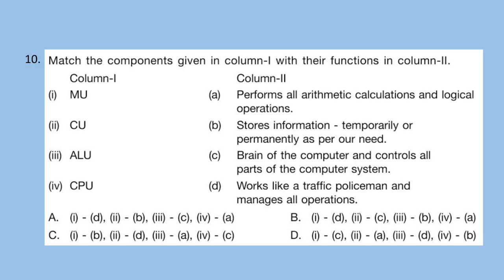Question 10: Match the components given in column 1 with their functions in column 2. Column 1 has: MU, CU, ALU, CPU. Column 2 functions: A. Performs all arithmetic calculations and logical operations. B. Stores information temporarily or permanently. C. Brain of the computer and controls all parts of the computer system. D. Works like a traffic policeman and manages all operations. The correct answer is option C: MU is B, CU is D (works like a traffic policeman), ALU is A (performs all arithmetic and logical operations), and CPU is C (brain of the computer).